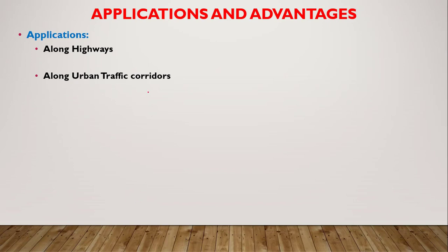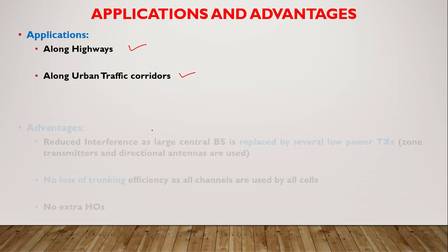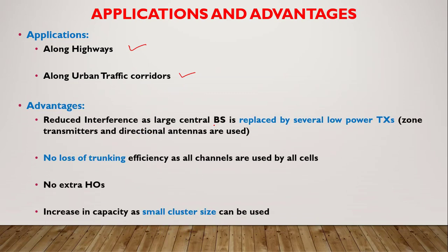The microcell zone approach is applied along highways and urban traffic corridors where frequent handoffs occur. Its advantages include reduced interference since large central base station transmitters are replaced by several low-power zone site transmitters, no loss of trunking efficiency since all channels are shared by the entire cell without grouping, no extra handoffs due to absence of channel grouping, and ultimately increased capacity due to a smaller cluster size.